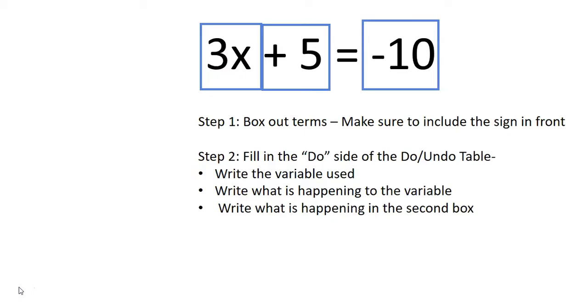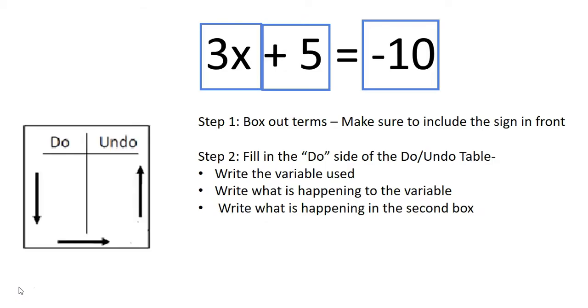Step 2 is to fill in the Do side of the Do-Undo table. Write the variable used. Next, write what's happening to the variable. Make sure you start with the box that has the variable, even if it's not first in the equation.